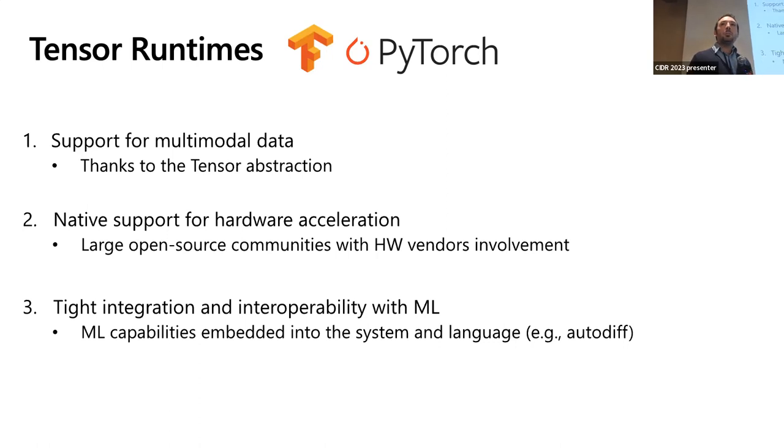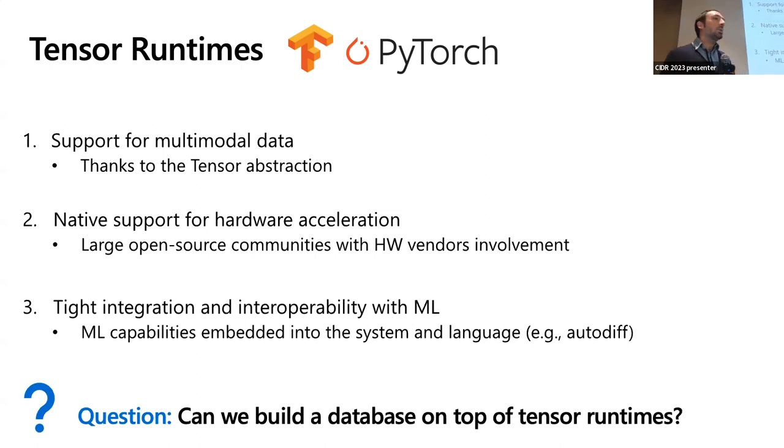Let's do a step back now and look at a different class of systems. So this is what I call them like tensor runtimes. Think about them like the well-known machine learning frameworks such as PyTorch, TensorFlow, and so on. So if you look at them, they support already multimodal data. Basically, they have this nice tensor structure, and they have a bunch of libraries such as TorchVision, TorchAudio. They allow you to load all the different modalities into tensors representation. They have native support for hardware acceleration, and they're able to achieve this because they have a really large open source community. About the tight integration with machine learning frameworks, they basically have machine learning capabilities embedded directly into the system and in the language itself.